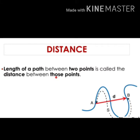The proper definition of distance is: the length of the path between two points is called the distance between those points. As you can see in the figure, you go from point A to point B, where point A is your house and point B is your school. The blue shaded line shows the total path you have to cover — that is the distance between the two points.